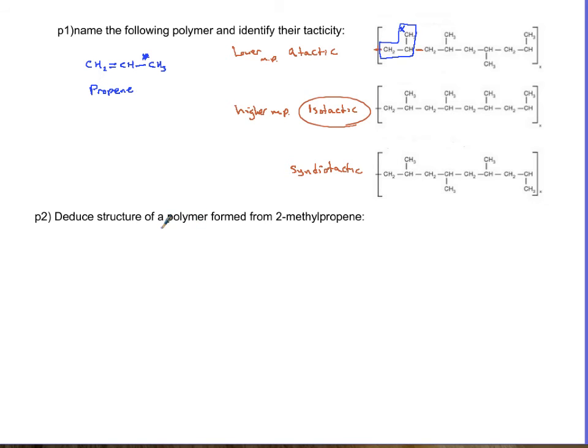The second question is I want you this time to draw the polymer of 2-methylpropene. So pause the video and do it yourself, and then let's compare notes. 2-methylpropene: it has three carbons.